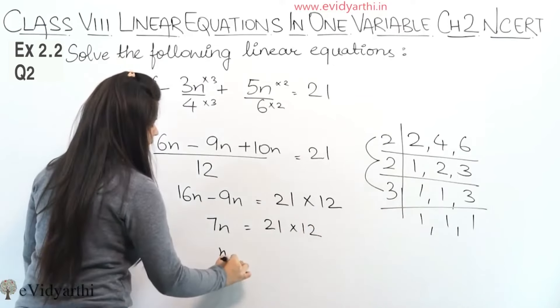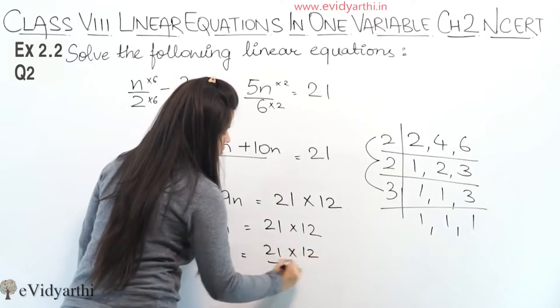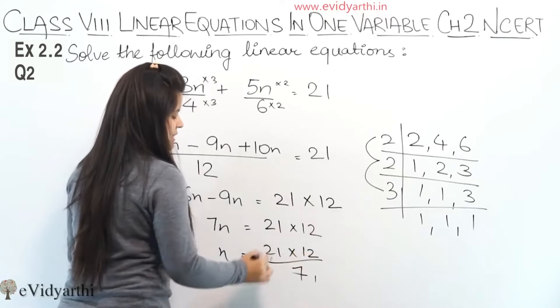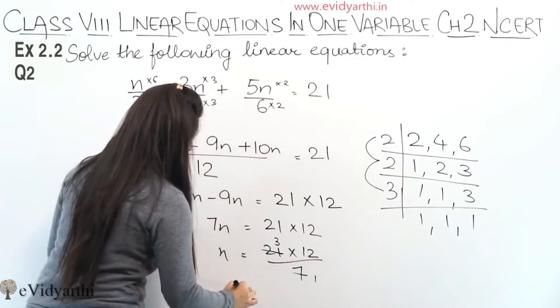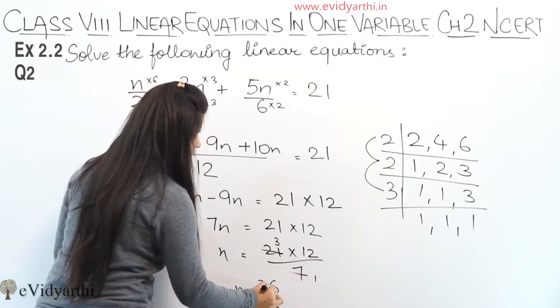Now n will find. 7 is here. Multiply here. Divide. So it will be upon 7. Now we cancel it. 7 is 7. 7, 3 is 21. So now n equals to 12 into 3. So 12 into 3 is 36.